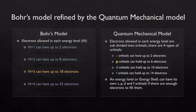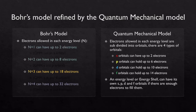The quantum mechanical model says that the electrons allowed in each energy level are subdivided into orbitals. There are four different types of orbitals we're going to talk about in this video. There are S orbitals that can each hold up to 2 electrons. P orbitals can hold up to 6 electrons within an energy level. D orbitals can hold up to 10 electrons within an energy level. And F orbitals can hold up to 14 electrons within each energy level.